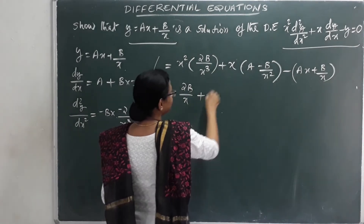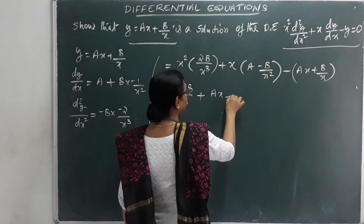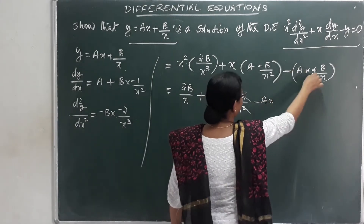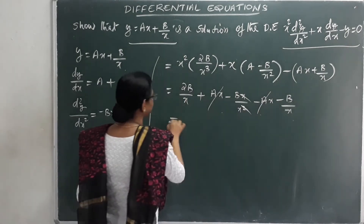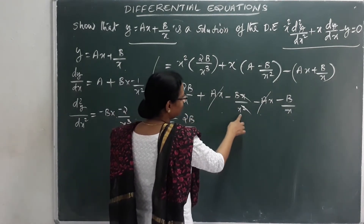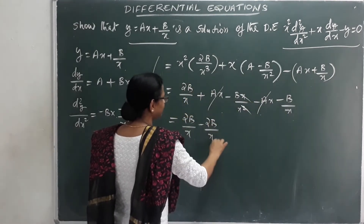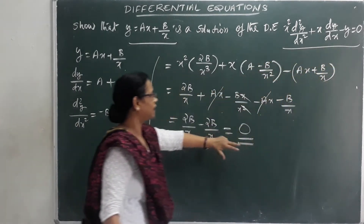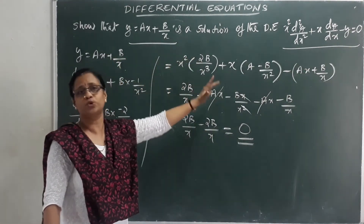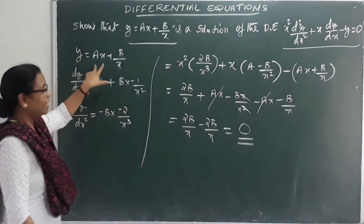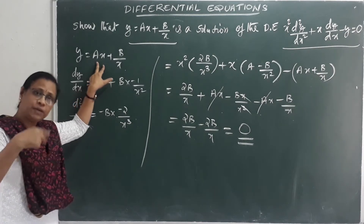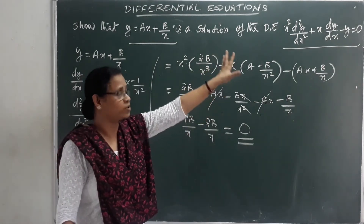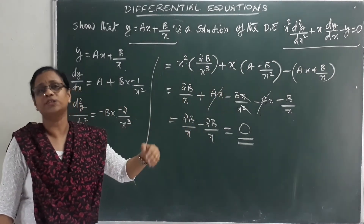This simplifies to 2b/x + a − b/x − ax − b/x, which equals 2b/x − b/x − b/x = 0. The result equals 0, confirming this is the correct solution. This is the first type of problem — verification of a solution.